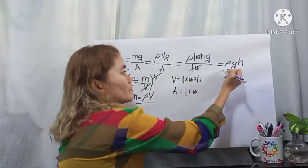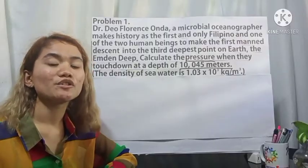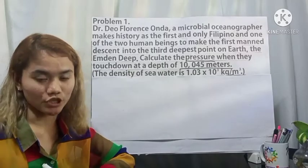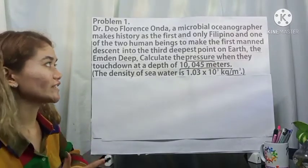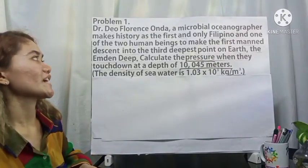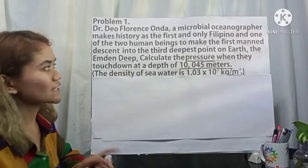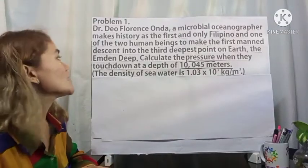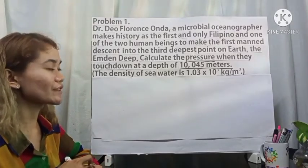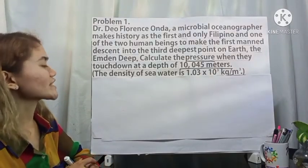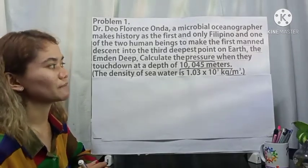So that is how we derive the formula for liquid pressure — it came from the formula of pressure, which is force divided by area. Now let us try solving a problem. Dr. Dale Florence Onda, a microbial oceanographer, makes history as the first and only Filipino, and one of two human beings, to make the first descent into the third deepest point on Earth, the Mden Deep. Calculate the pressure when they touch down at a depth of 10,045 meters, given that the density of seawater is 1.03 × 10³ kilogram per meter cubed.